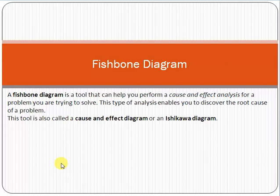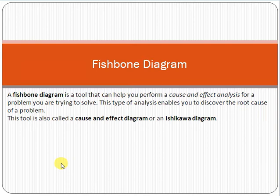Basically, the fishbone diagram is a tool that can help you perform a cause and effect analysis for a problem you are trying to solve. It is a problem-solving tool. We use this tool to analyze cause and effect relationships. For example, if you are working in any organization — say a factory or plant — and you notice that the productivity of the plant is decreasing day by day, that is a problem.